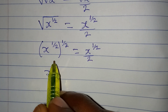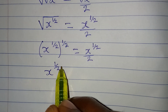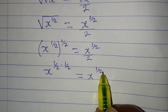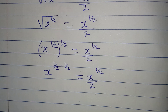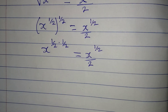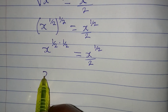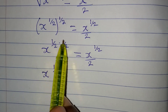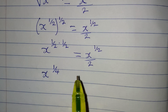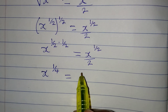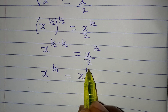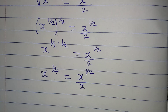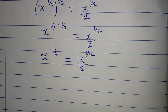There is a law that says we can always multiply the powers. So this means we have x to the power of 1 over 2 times 1 over 2, and then we have x to the power of 1 over 2 divided by 2. From here we get x to the power of 1 over 4, because 1 times 1 is 1 and 2 times 2 is 4. And this equals x to the power of 1 over 2, all over 2.